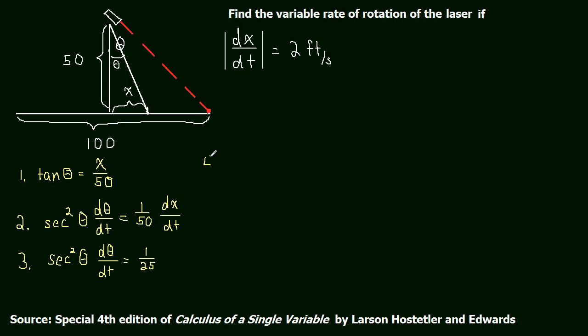So let's solve for dθ/dt. That's what we wanted to know. dθ/dt is equal to 1 over 25 times 1 over secant squared. We divided both sides by secant squared, which is the same thing as multiplying by the reciprocal. But 1 over secant squared is just cosine squared. So this simplifies to cosine squared of theta over 25.